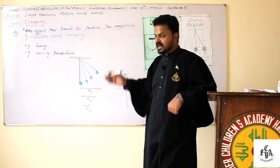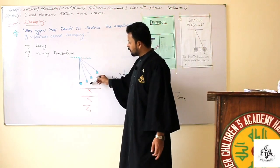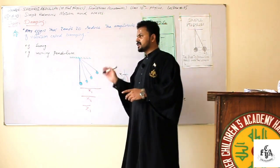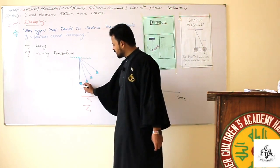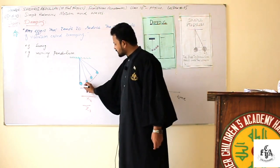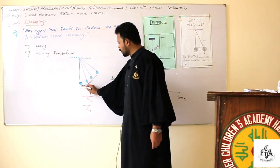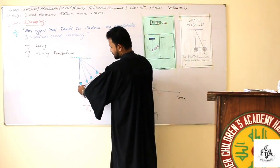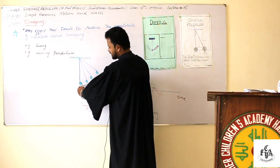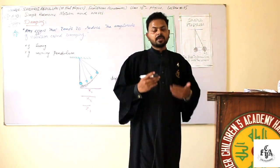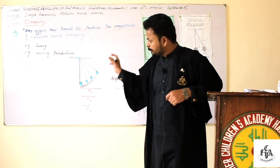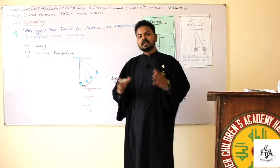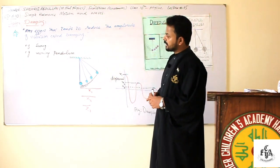Let's look at the pendulum example. The pendulum oscillates between the central position and extreme positions A and A-dash. Initially the pendulum swings to its full extent — that is the first amplitude. In the second case it swings a little less, in the third case less still, and finally it stops. So the amplitude of vibration decreases with the passage of time, which is what we call damping.